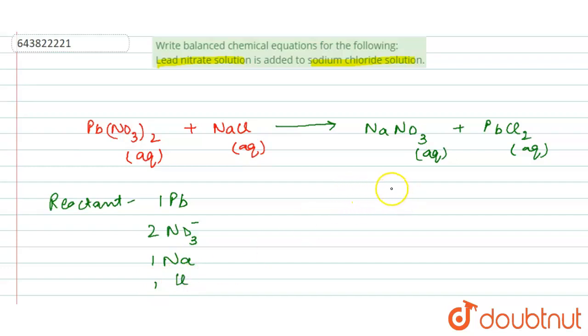In product side one sodium is present, one nitrate ion is present, one lead and two chloride ions are present. So first of all we will balance nitrate ions.